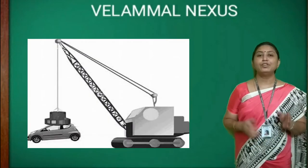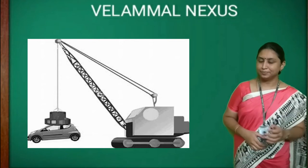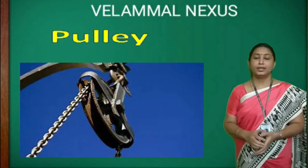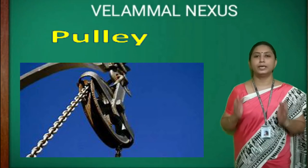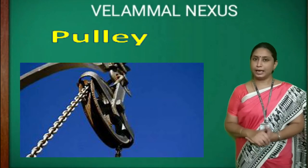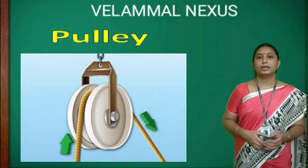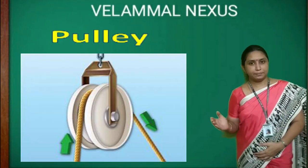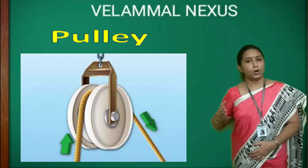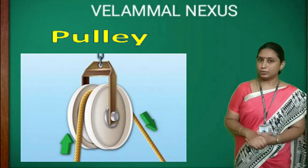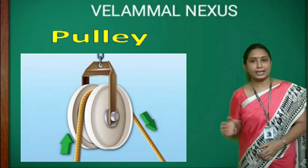Have you seen a crane lifting a heavy object like a car? The crane is using a simple machine called a pulley to lift the heavy object. A pulley consists of a wheel with a grooved rim and a rope, belt, or chain running around the groove. The wheel rotates around an axle.